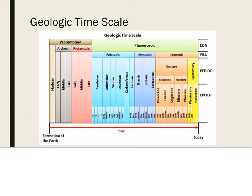Scientists learn about Earth's history by studying the rock and fossil records. Based on these pieces of information, scientists have divided Earth's history into distinct intervals of time on the geologic time scale. The geologic time scale is the span of Earth's entire history organized into smaller increments of time. Each increment is defined by the types of organisms that were abundant during that time, as collected from the fossil record.